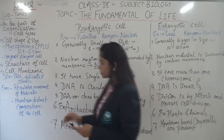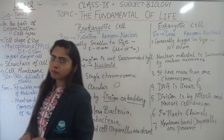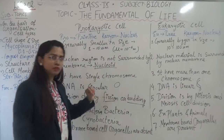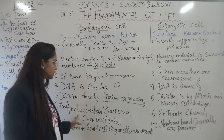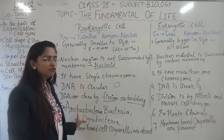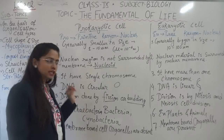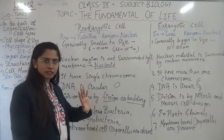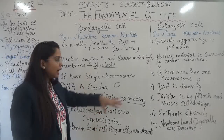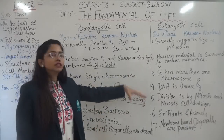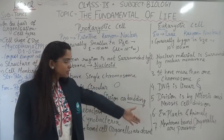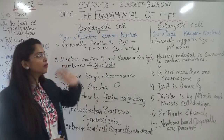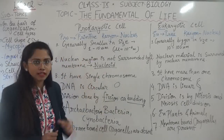So now you have understood that you are an advanced organism — a eukaryote. The bacteria are the simple form of organisms having prokaryotic cells. Inside them no membrane-bound cell organelles are present, whereas inside eukaryotic cells there is the presence of membrane-bound cell organelles. So you have understood about the two types of cells.